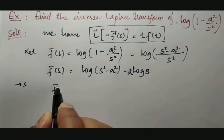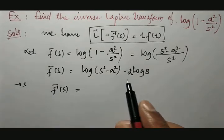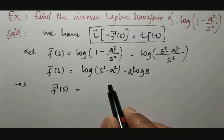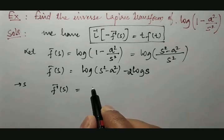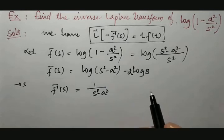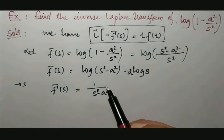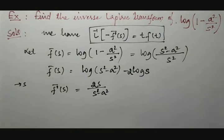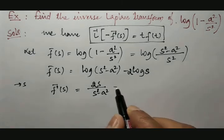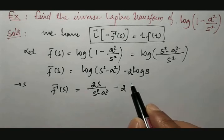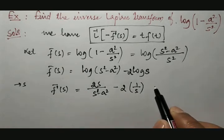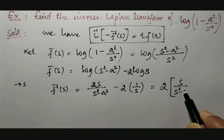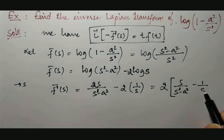Differentiating with respect to s, f-bar-dash of s equals the differentiation of log(s-squared minus a-squared), which is 1 over s-squared minus a-squared times 2s, minus 2 times the differentiation of log s. Taking 2 as a common factor, it is equal to 2 times s over s-squared minus a-squared, minus 1 over s.